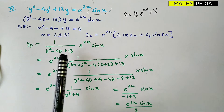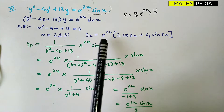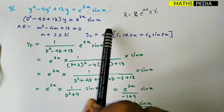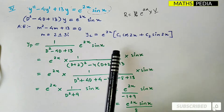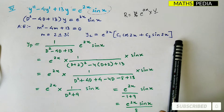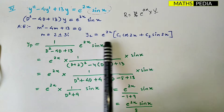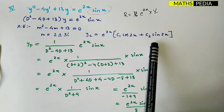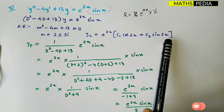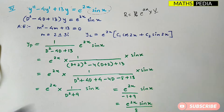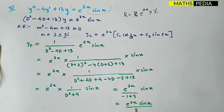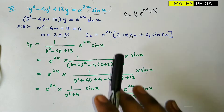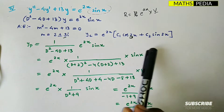You will get a complex number, as you can see over here. So the complementary function is equal to e^(ax) into c1·cos(αx) plus c2·sin(αx). Here specifically we get c1·cos(2x) plus c2·sin(2x).